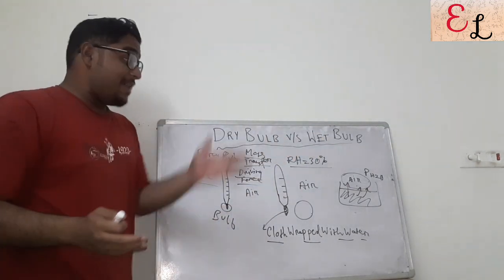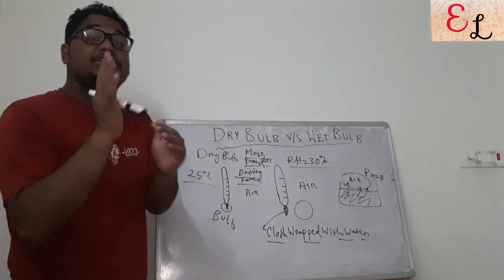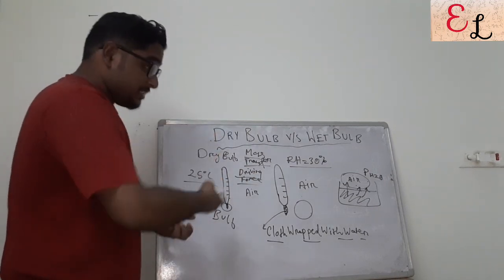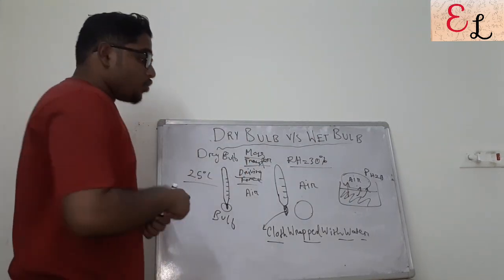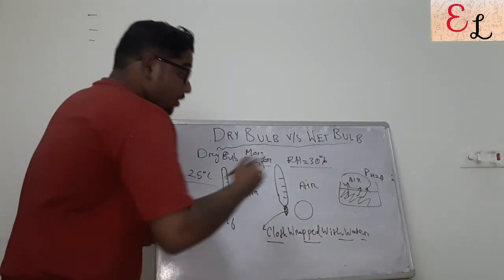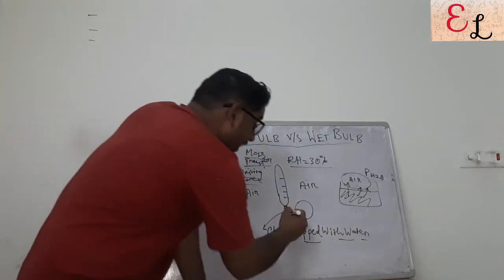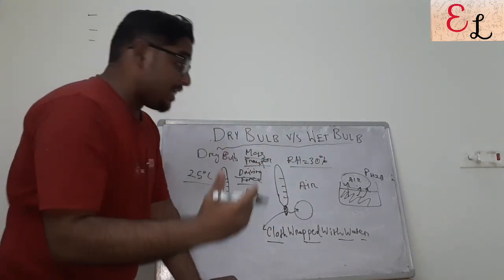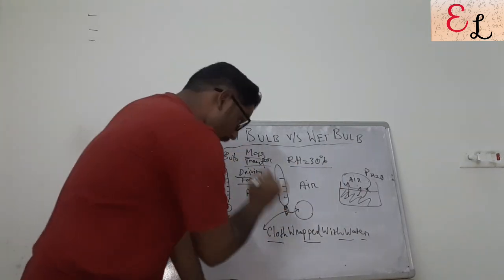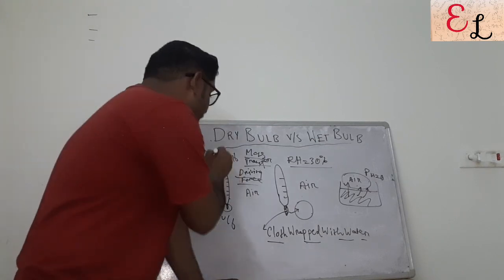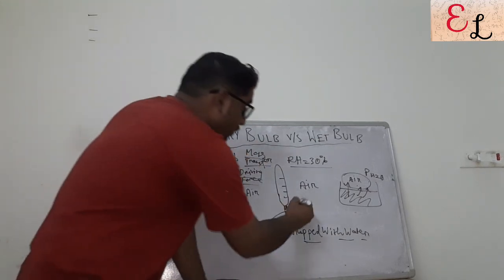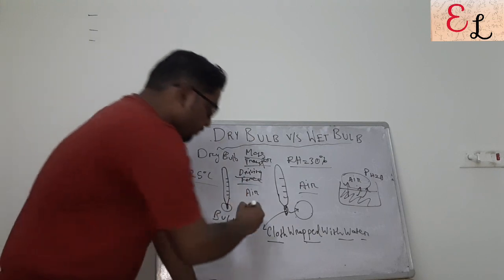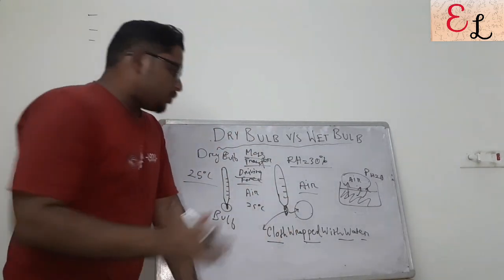Because of this mass transfer driving force, due to the difference in partial pressure, water tends to evaporate as water vapor into the air, trying to saturate it — that is, the relative humidity of air increases. So whenever we wrap this bulb with a wet cloth, the water will try to evaporate into the atmosphere. If the relative humidity is 100%, then dry bulb temperature equals wet bulb temperature, because there will simply be a sensible heat transfer from air to the bulb.